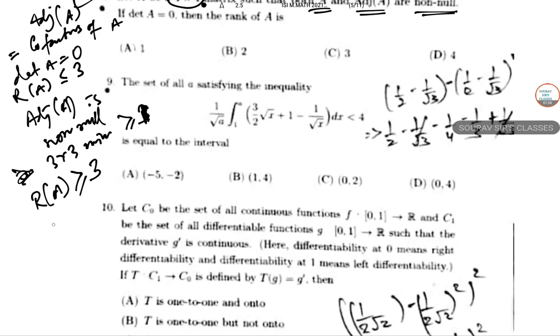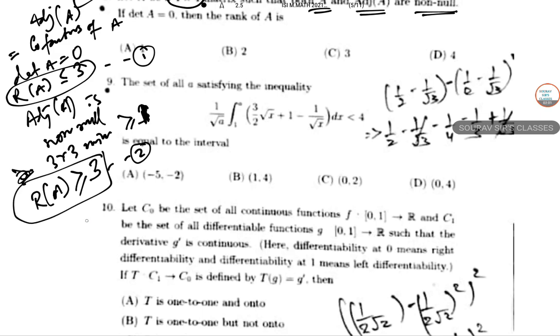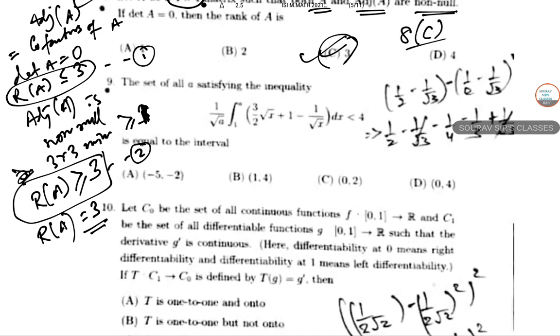Therefore rank of A is greater than or equal to 3. Combining both constraints — rank ≤ 3 from the determinant condition, and rank ≥ 3 from the non-null adjoint — the rank must be exactly 3. The answer to question 8 is C.